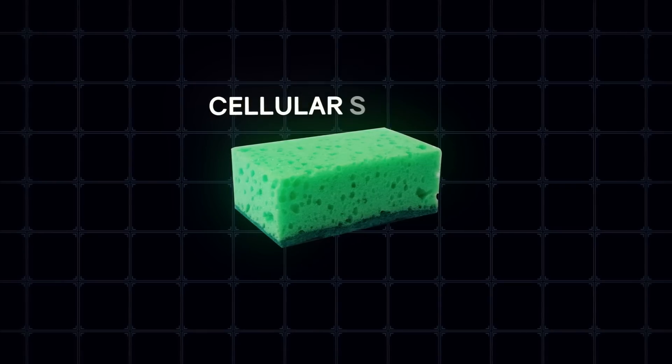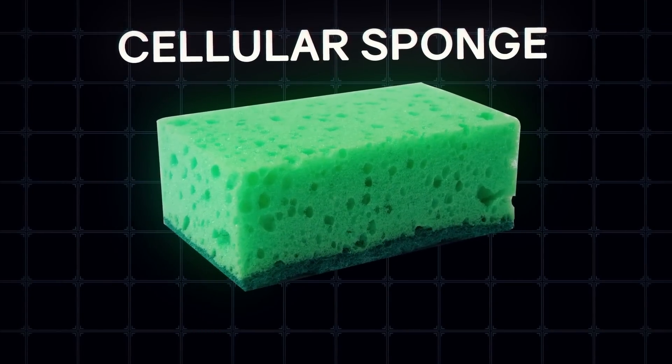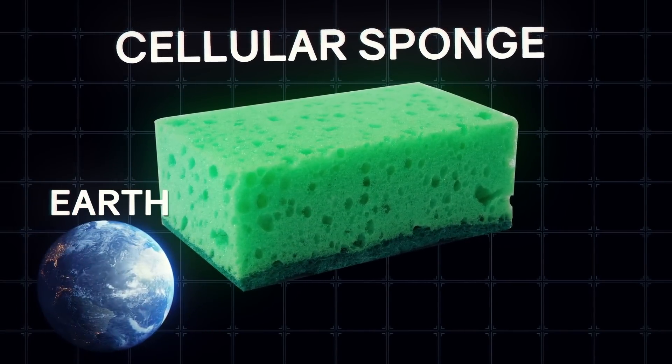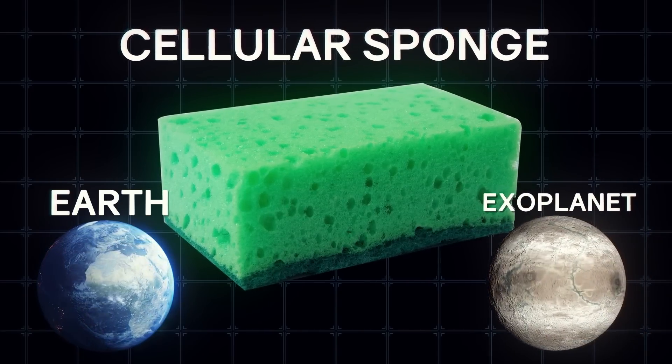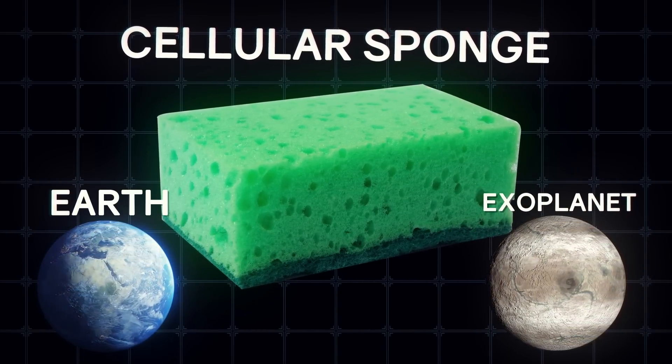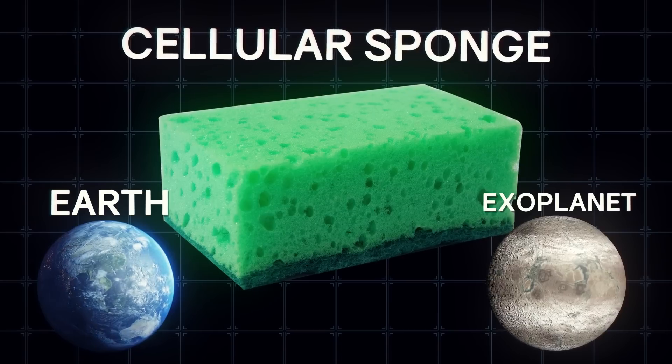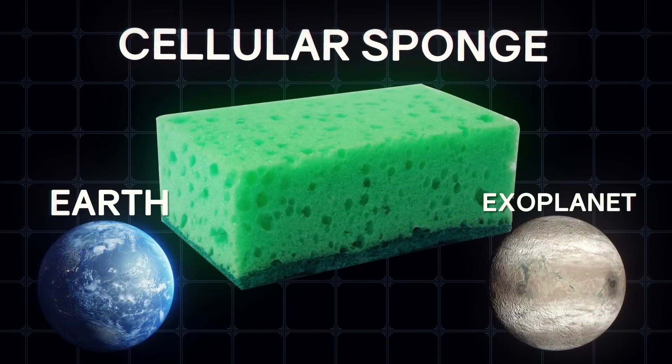The cosmos is like a cellular sponge, only an extremely large one. And it doesn't matter whether you're looking at this mega-sponge from Earth or from the most distant exoplanet ever discovered. The picture won't change much. The problem of finding the center of mass in a homogeneous space is impossible.